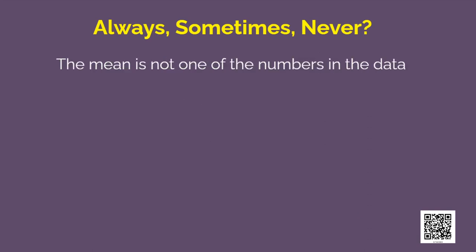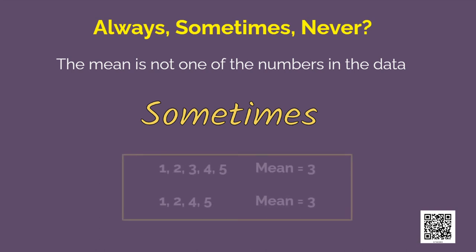The mean is not one of the numbers in the data. Sometimes yes and sometimes no. We have looked at many examples regarding this, isn't it? As you can see here, the first group of data, the mean is one of the numbers in the data. And in the second group of data, mean is not part of the group.